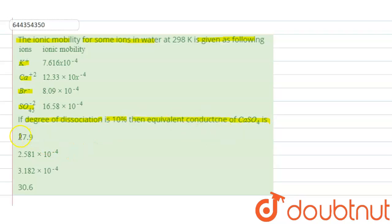27.9, 2.58 times 10 raised to the power minus 4, 3.12 into 10 raised to the power minus 4, 30.6. Now in the given question, first we calculate the equivalent conductance at infinite dilution of calcium sulfate.